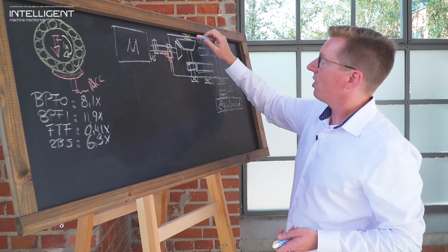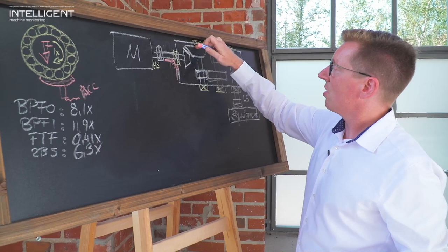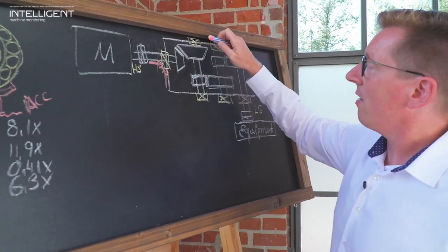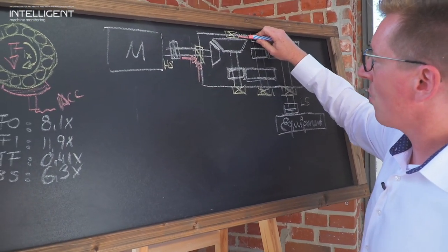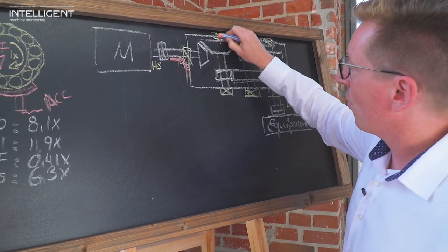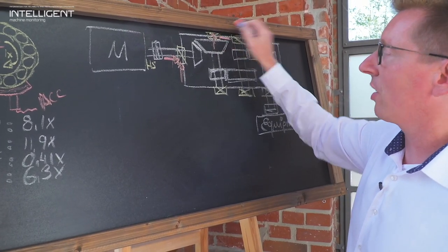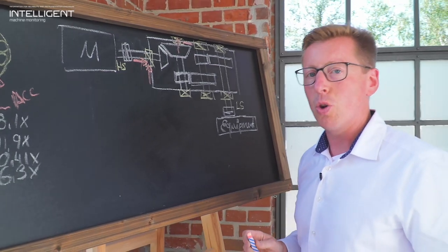The same here - go through step by step. We have the first speed reduction gear here and you would see radial forces in this direction and thrust forces in this direction, so two acceleration sensors in this position would also be advised.